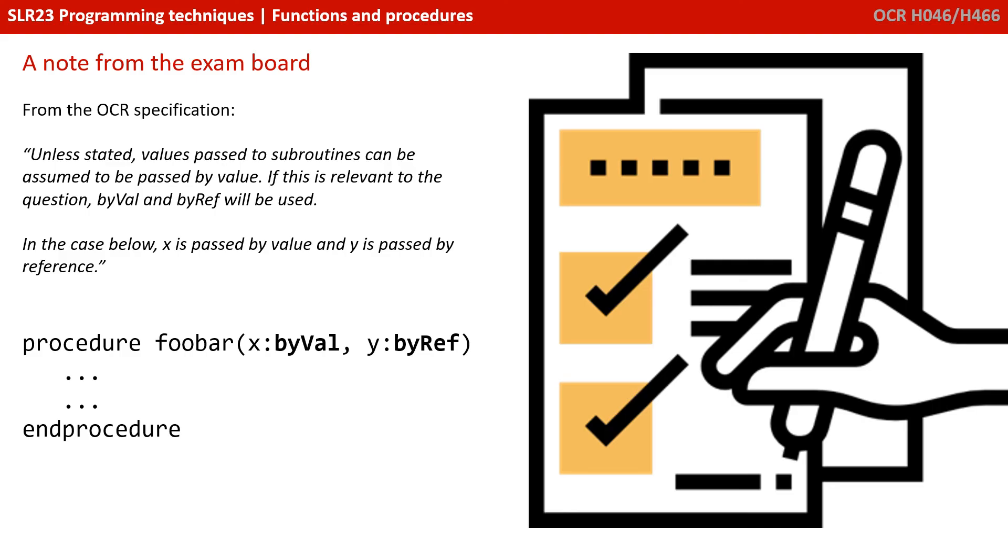A quick note from the exam board: the OCR specification says unless stated, values passed to subroutines can be assumed to be passed by value. If this is relevant to the question, ByVal and ByRef will be used. So in the case below, X is a variable being passed by value and Y is a parameter being passed by reference. Bear in mind, these sort of keywords may not be familiar to you based on the language that you've chosen, but you do need to be familiar with these concepts and how they'll be shown to you in the exam.